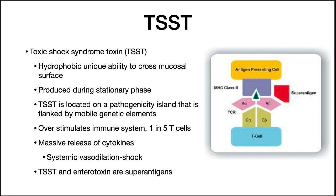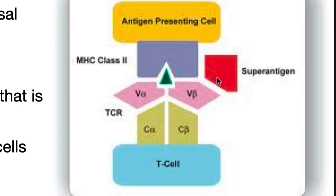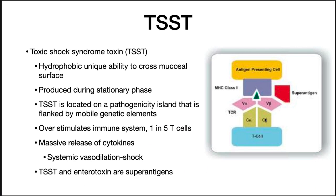The toxin is so deadly because it targets T cells and is what's called a superantigen that overstimulates the immune system. Instead of binding in the MHC2 groove as a normal antigen will, the superantigen will interact with conserved parts of MHC2 molecules and the T cell receptor. This causes the toxic shock syndrome toxin to activate one in five T cells, instead of a typical antigen which activates maybe one in 10,000 T cells. This causes a massive release of cytokines and systemic vasodilation, which then leads to shock. Both TSST and the food poisoning enterotoxin are superantigens.